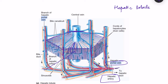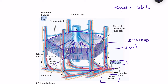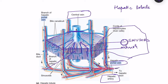Blood from the hepatic arterioles and portal venules enters channels known as sinusoids. Blood from these sinusoids ultimately drains into a central vein. Each hepatic lobule has a central vein, and blood from these central veins combines to form the hepatic vein, which ultimately drains into the inferior vena cava.